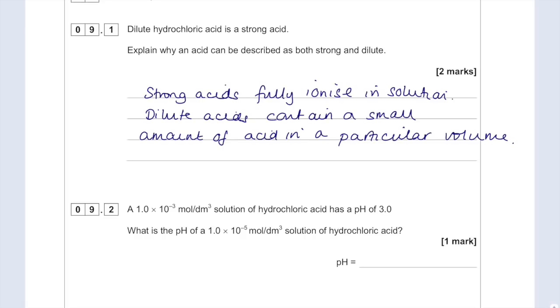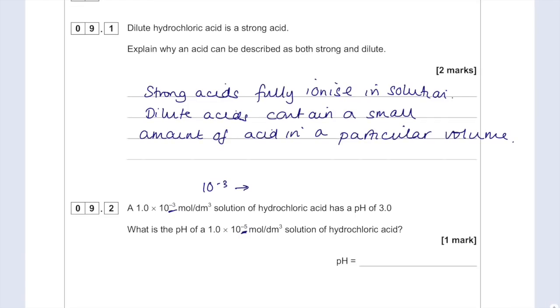A 1.0 × 10⁻³ mol/dm³ solution of HCl has a pH of 3. What is the pH of a 1 × 10⁻⁵ mol/dm³ solution of HCl? Let's compare the concentrations. It's gotten less concentrated and gone from 10⁻³ to 10⁻⁴, which increases pH by 1, then from 10⁻⁴ to 10⁻⁵, which increases pH by another 1. So the pH will be 5.